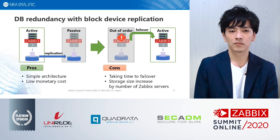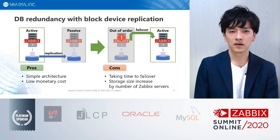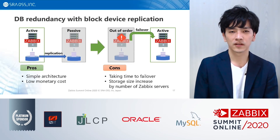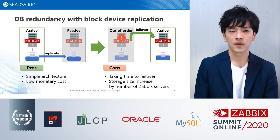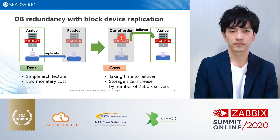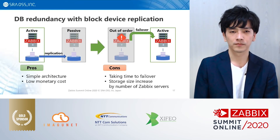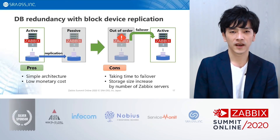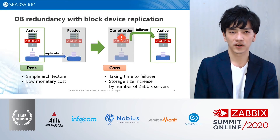Last is the block device replication method. With this method, database files are replicated with block device. Pros of this method are simple architecture and low monetary costs. Cons are that it takes time to failover, and storage size increases by the number of service servers.